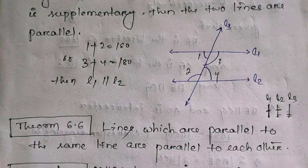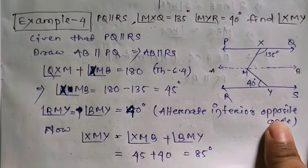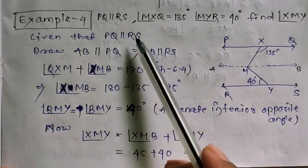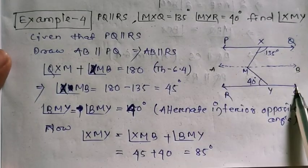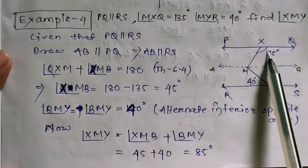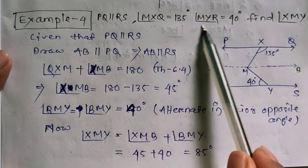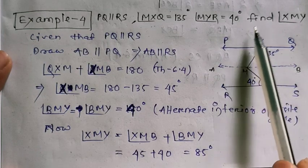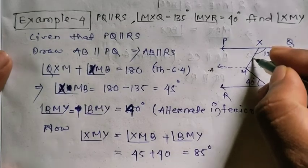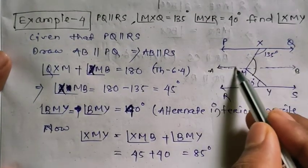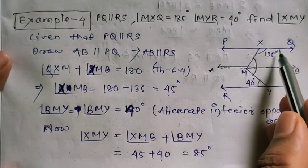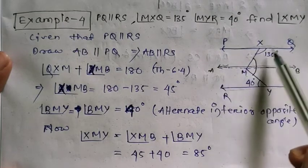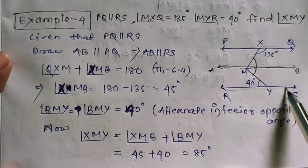Example 4: Given PQ parallel to RS, angle MXQ equals 135 degrees, and angle MYR equals 40 degrees. We need to find angle XMY. Let us draw a line AB parallel to PQ. Since PQ is parallel to AB, and using Theorem 6.4, the angles on the same side of the transversal are supplementary.